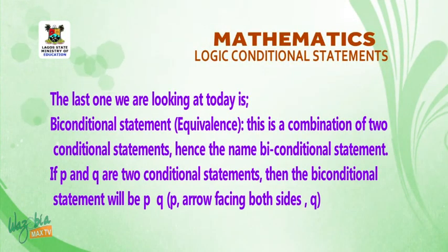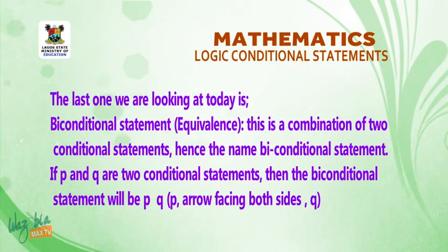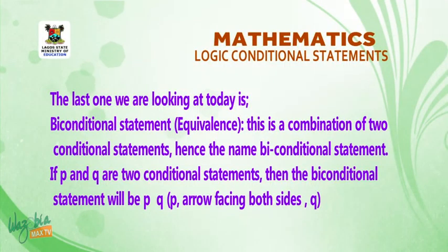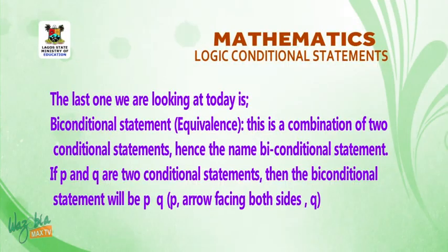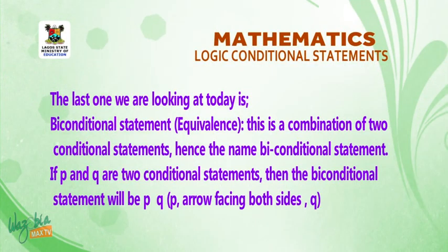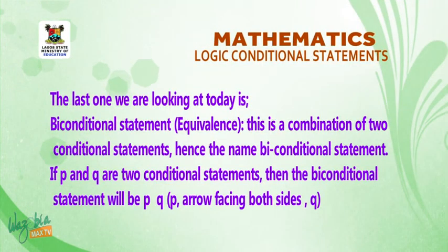The last one is the biconditional statement, which is also called equivalence. This is a combination of two conditional statements, hence the name biconditional. If p and q are two conditional statements, then the biconditional statement will be written as p double-arrow q.